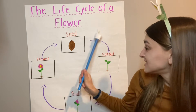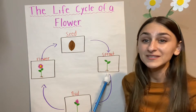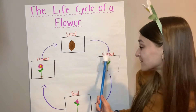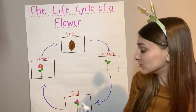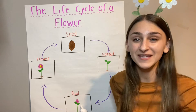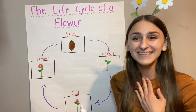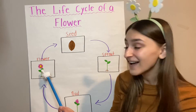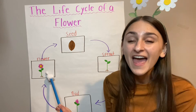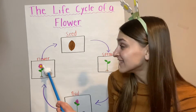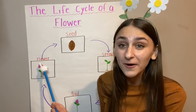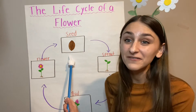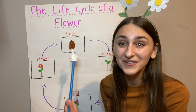After the seed comes a sprout. Can you say sprout? The seed starts to sprout, and then that sprout grows a bud on it. Can you say bud? And then, that bud turns into a flower. And then, inside that flower, those seeds start to fall out, and they go into the ground, and the life cycle of a flower starts all over again.